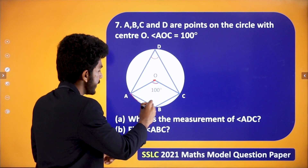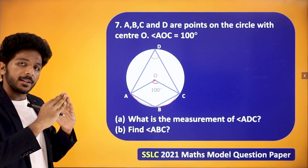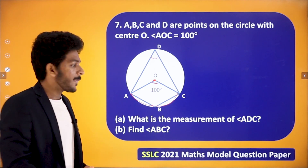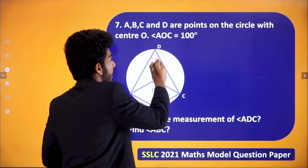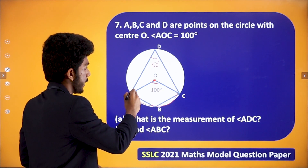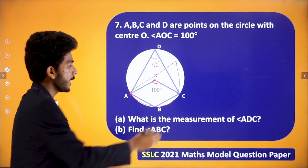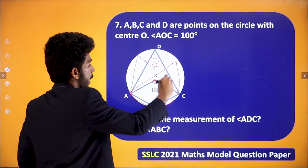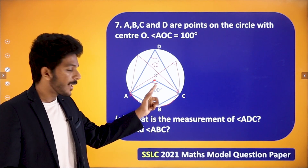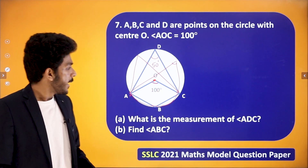Arc AC subtends a central angle of 100 degrees. The inscribed angle theorem states that an inscribed angle is half the central angle subtending the same arc. So angle ADC, which is an inscribed angle on arc AC, equals 50 degrees.